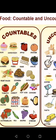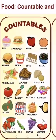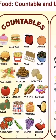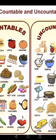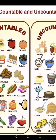Countable food items include: sandwich — I can add S and count it — apple, orange, burger, fries, eggs, salad, vegetables, cookies, potato, tomato, carrot, hotdog, candies, olives, peanuts, pancakes, onion, watermelon, pea, grapes, and cherry. These are all countable food items, so I don't need anything before them — I just need to put a number to show the quantity.